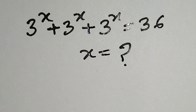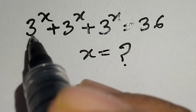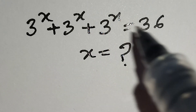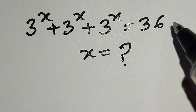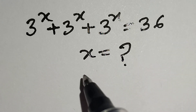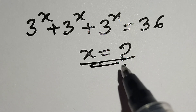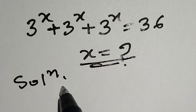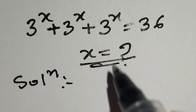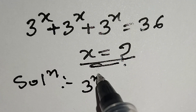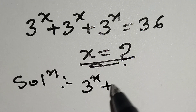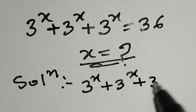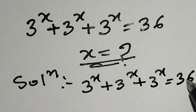Hello, this is a nice math problem. 3 to the power x plus 3 to the power x plus 3 to the power x is equal to 36, and we have to find the value of x. So let's start the solution. The given equation is 3 to the power x plus 3 to the power x plus 3 to the power x is equal to 36.